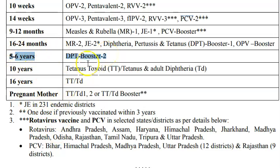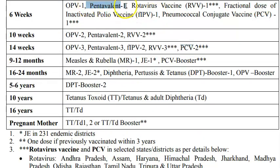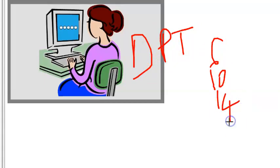At five to six years, DPT booster 2 is given. So there are two boosters for diphtheria, pertussis, and tetanus: the first at less than two years, and the second at five to six years. The pentavalent vaccine itself was given in three doses at six, ten, and fourteen weeks, making the full DPT schedule: three primary doses plus two boosters.